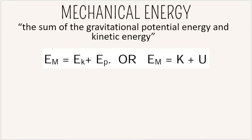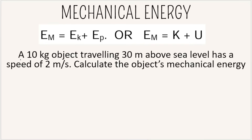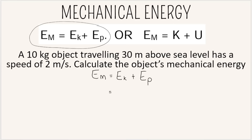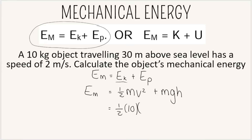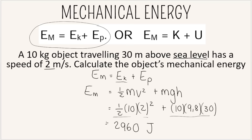Mechanical energy is the sum of gravitational potential energy and kinetic energy. A worked example: a 10 kg object is traveling 30 meters above sea level at a speed of 2 m/s. Calculate the object's mechanical energy. ME = ½mv² + mgh = ½ × 10 × 2² + 10 × 9.8 × 30. Add the kinetic energy and potential energy together. The mechanical energy is 2,960 joules, taking sea level as the zero reference height.